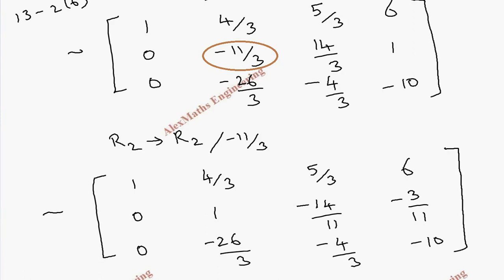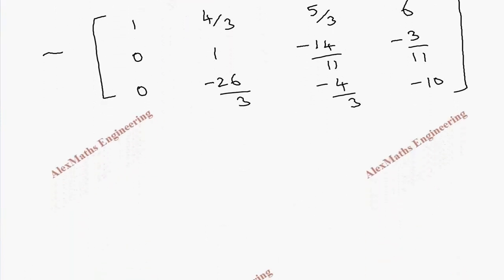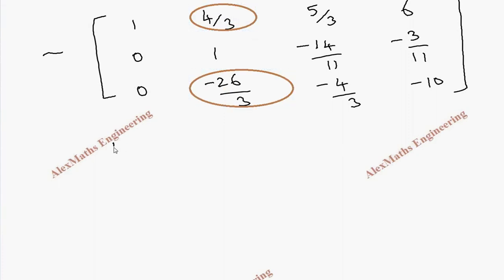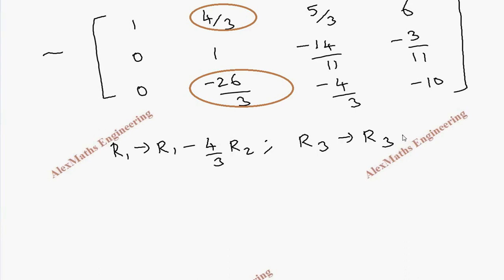Now, making this 1 the pivot, we are going to make two zeros above and below it. So R1 is written as R1 minus (4/3)·R2, and R3 is written as R3 plus (26/3)·R2, because there is already a minus sign.